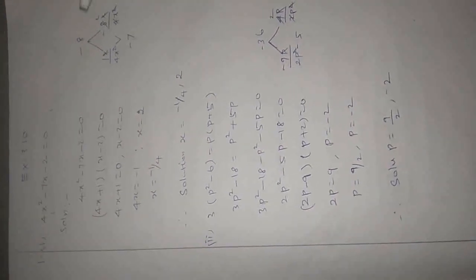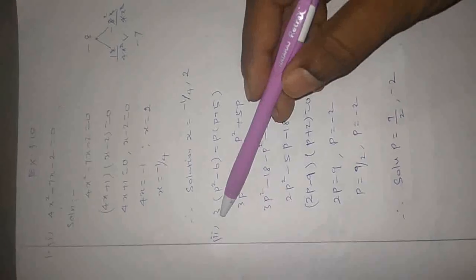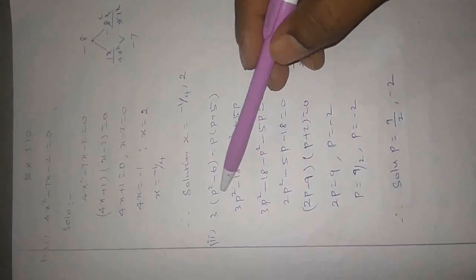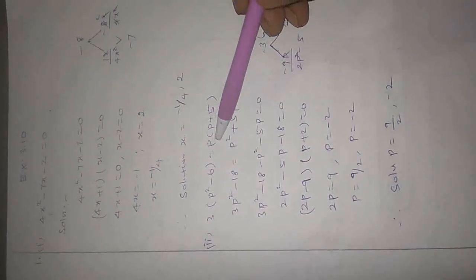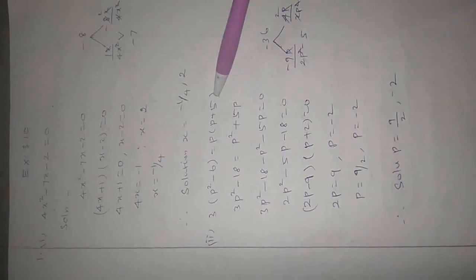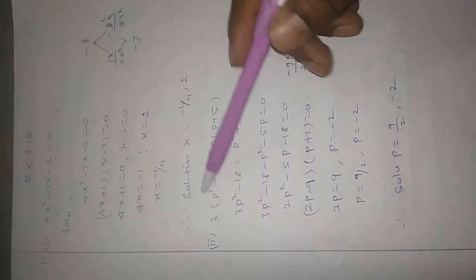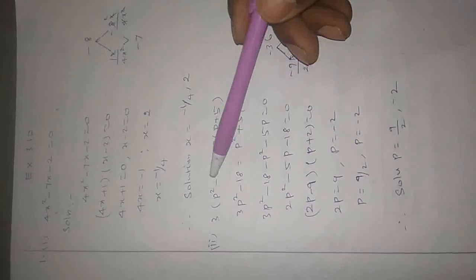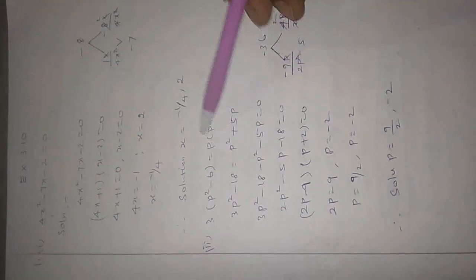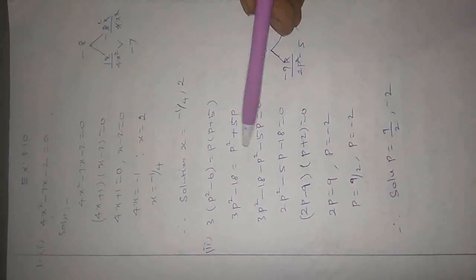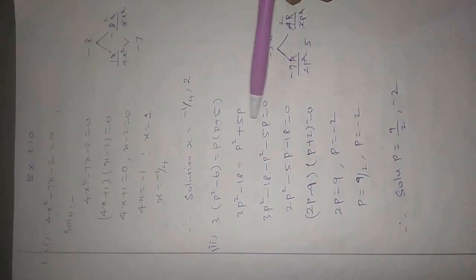You will be clear. Next sum, second: 3 into p squared minus 6 is equal to p into p plus 5. Expanding: 3p squared minus 18 equals p squared plus 5p.